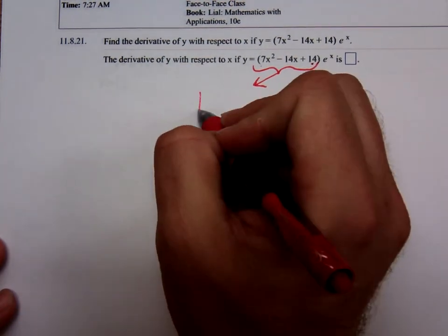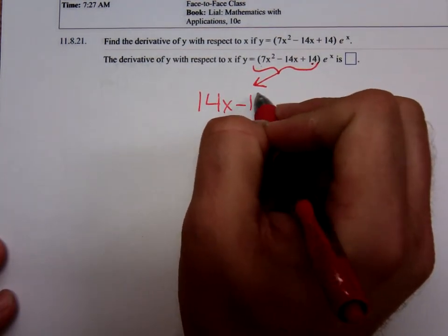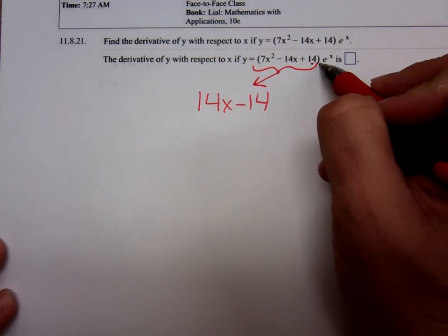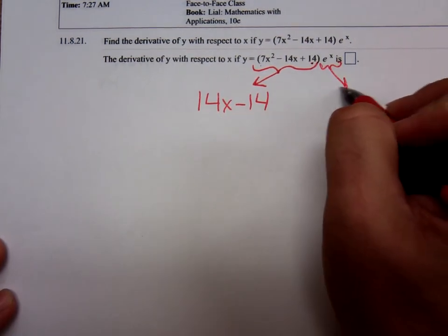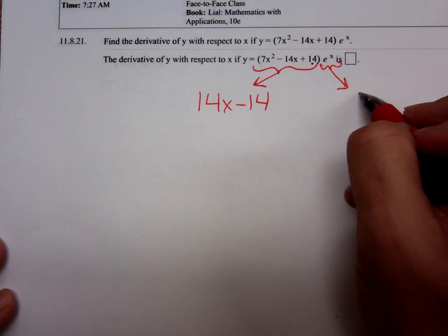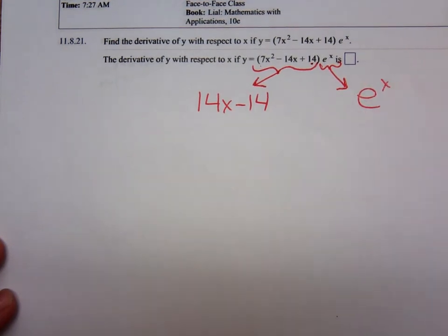Differentiating we'll get 14x and minus 14. What about the derivative of e to the x? The derivative of e to the x is just e to the x.